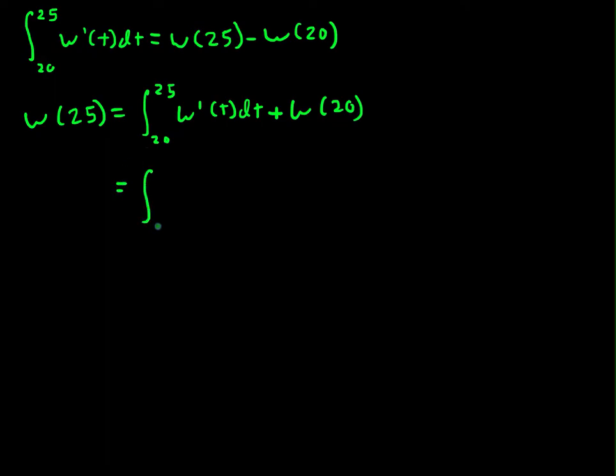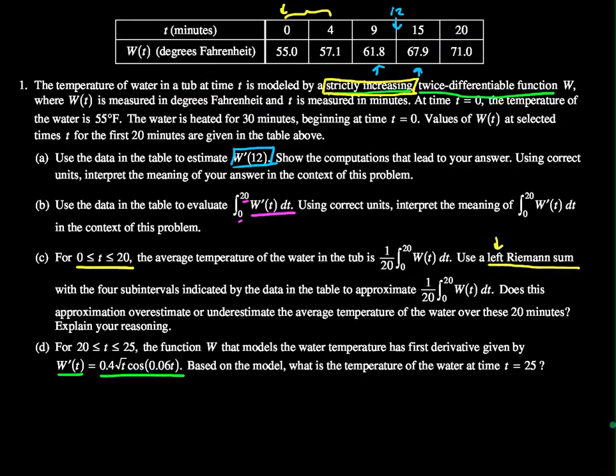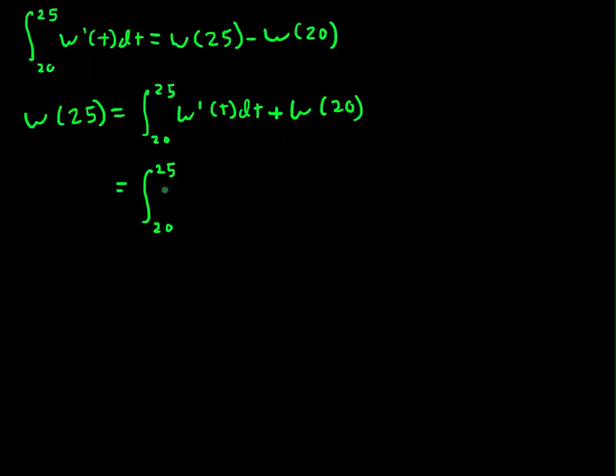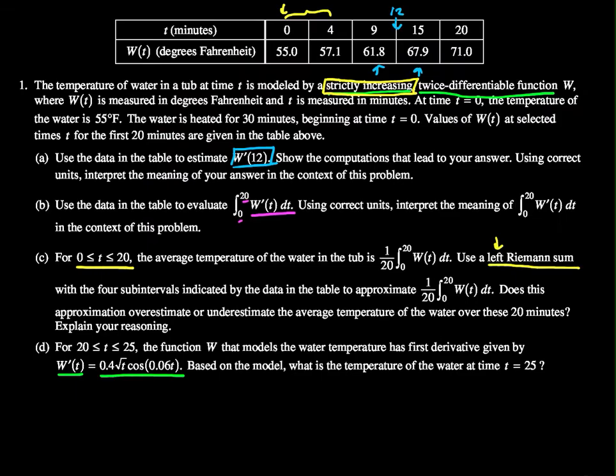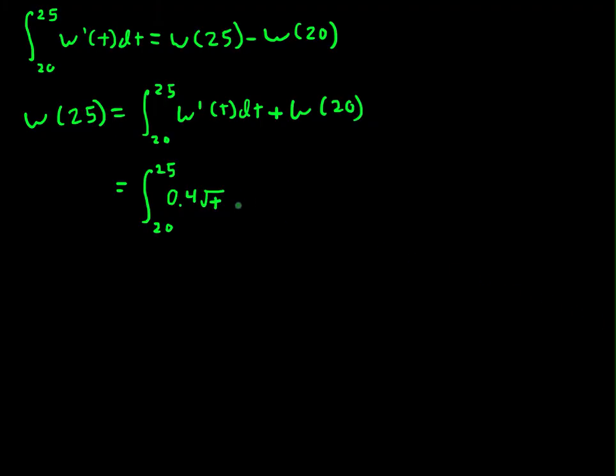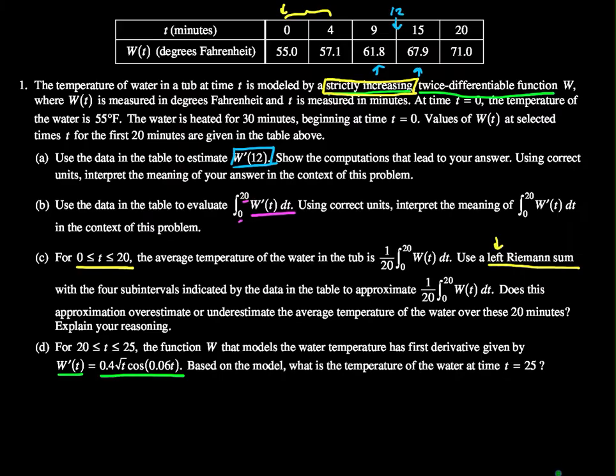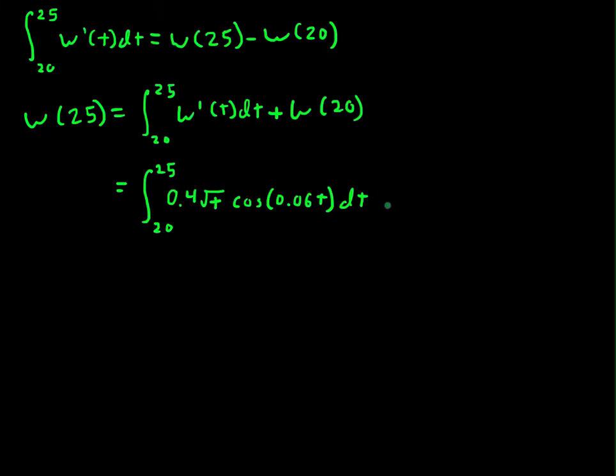So this will equal the integral from 20 to 25 of - let me glance back so I have this correct - the function is 0.4 root t cosine of 0.06 t dt. And then w of 20 from our table was 71, so 71 degrees Fahrenheit at that point in time, plus 71.0.